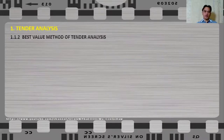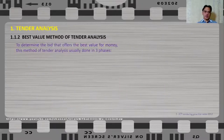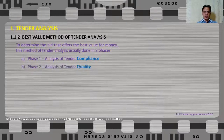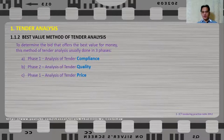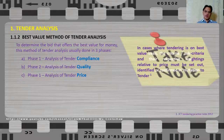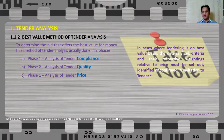The best value method of tender analysis is usually done in three phases: the first phase is the analysis of compliance, the second is the analysis of tender quality, and the third is the analysis of tender price. So price is only the last phase. We must note that where tendering is on a best value basis, the criteria, sub-criteria, and their respective weightings relative to price must be set out and confirmed in the invitation to tender.